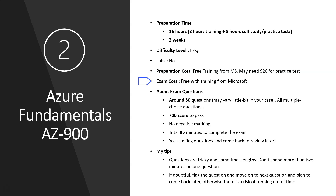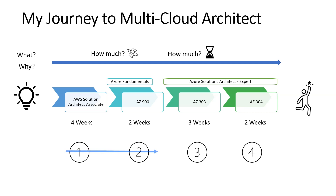For AZ-900, you may spend around $20 on a practice test, but the training and exam are free — you receive a free exam voucher upon completing Microsoft's online training. The exam has around 50 multiple choice questions, a passing score of 700, no negative marking, and 85 minutes to complete. You can flag questions and come back to review. My tip: some questions are tricky or lengthy — don't spend too much time on one question; flag it and come back later.